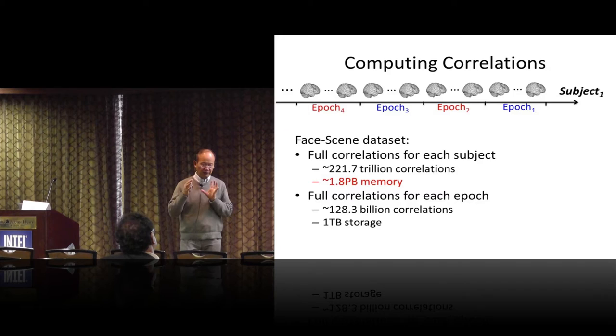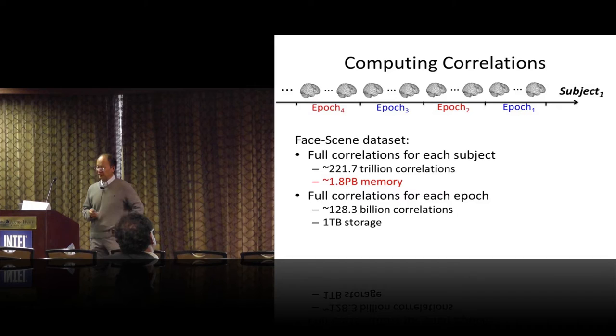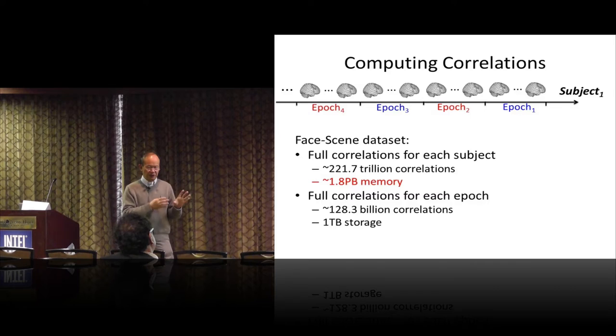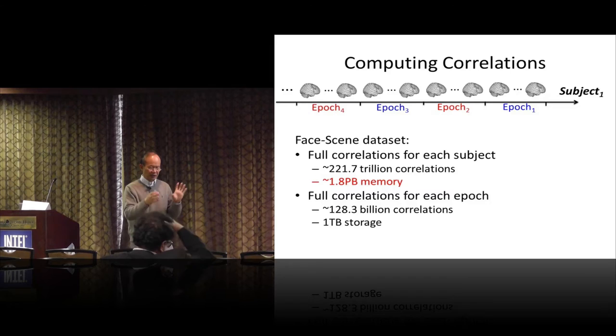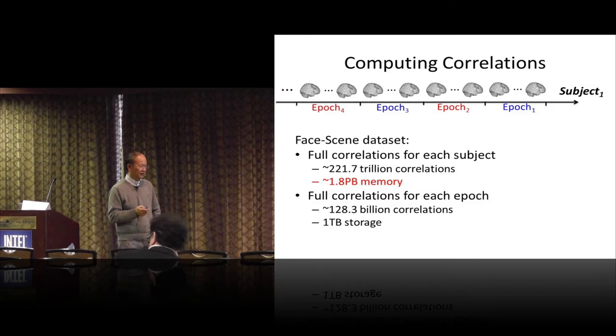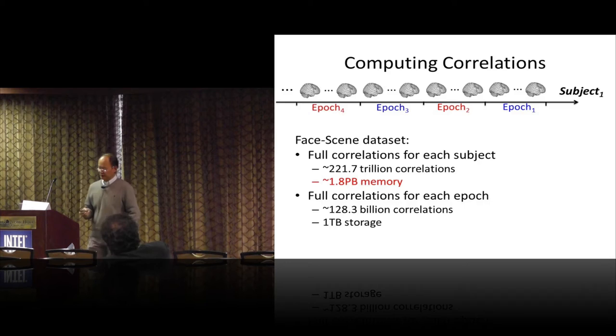So if you look at that data set I just mentioned, face-scene data set, if you truly compute full correlations for each subject, you need to compute 220 trillion correlations. That would require 1.8 petabytes of memory to store. That's just not even tractable with this small data set. So the neuroscientists would need to come in to figure out what are the correlations actually useful, meaningful in neuroscience perspective and what are not. Then you can do some data reduction at the higher level. So one way to do this would be to only compute full correlation for each epoch. So each epoch, remember, we have 12 human brains. We actually compute Pearson correlations. But instead of strictly doing that, we actually reduce that to a matrix multiplication. And that becomes for each epoch, you produce one correlation matrix. That's about 35,000 by 35,000 matrix. By doing this, you have about 120 billion correlations. And you need about one terabyte storage, which is very much manageable in even a small cluster.